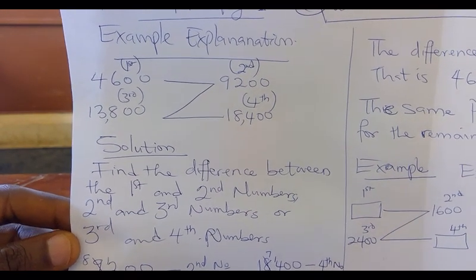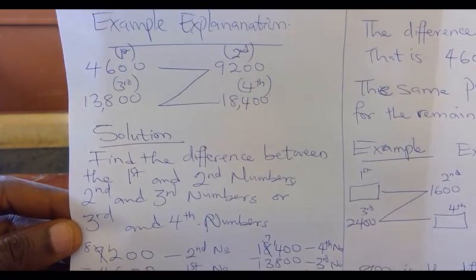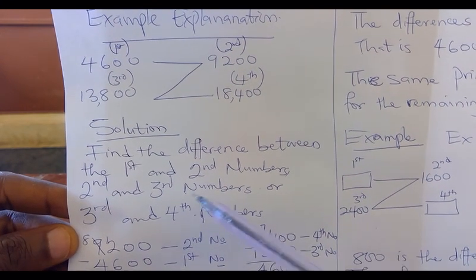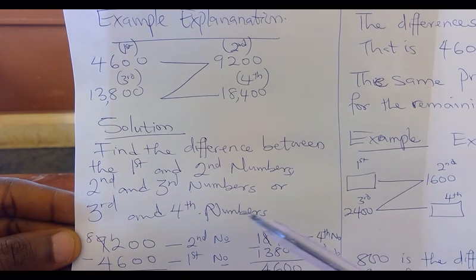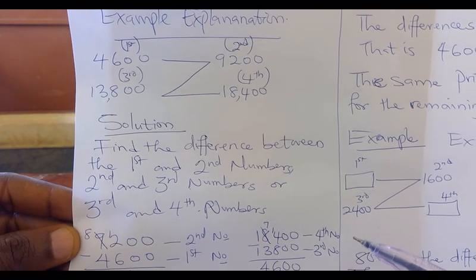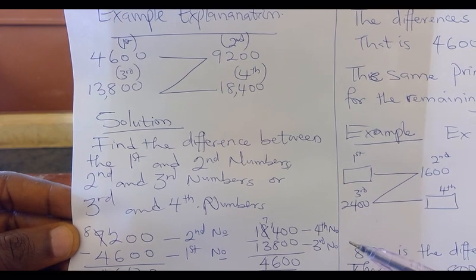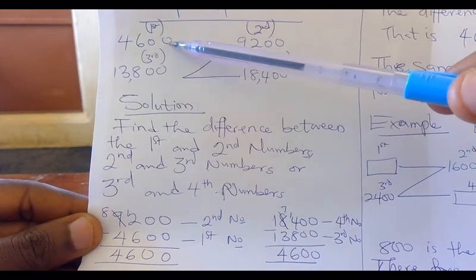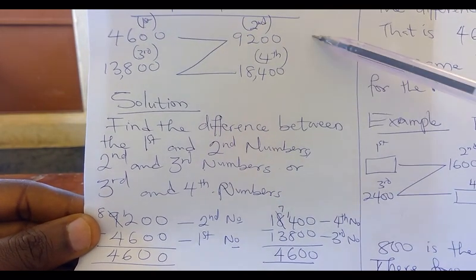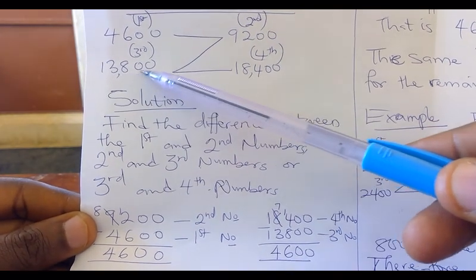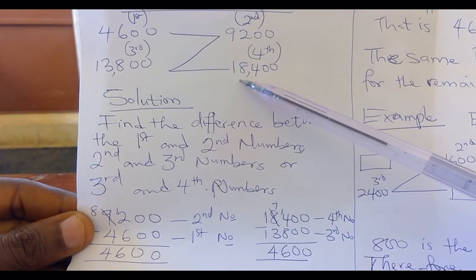We want to see how to find this solution. Looking at the pattern of the question, the solution is to find the difference between the first and the second number, or the second and the third number, or the third and the fourth number. Any of these will give you the difference, provided you are given any one of them, and that will lead us to how to solve our problem. Now, the first number is 4,600, the second number is 9,200, the third number is 13,800, and the fourth number is 18,400.